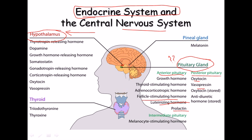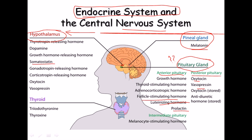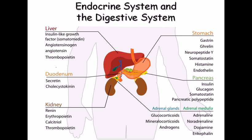The thyroid gland secretes thyroxine and triiodothyronine. The pineal gland secretes melatonin, which helps maintain the circadian rhythm. The hypothalamus produces dopamine, thyrotropin-releasing hormone, somatostatin, gonadotropin-releasing hormone, oxytocin, and vasopressin, and is the major controller of the endocrine system.